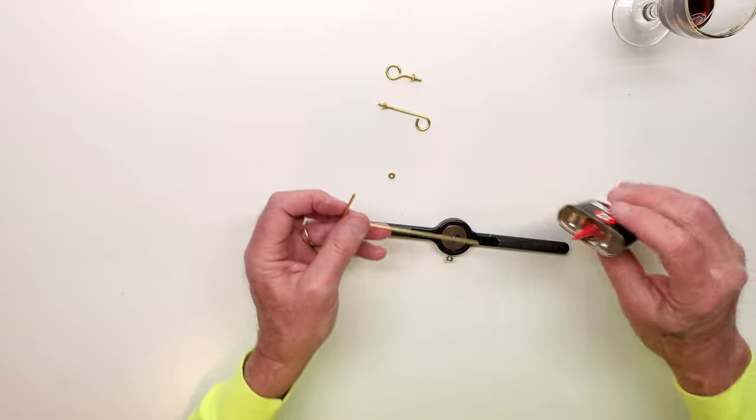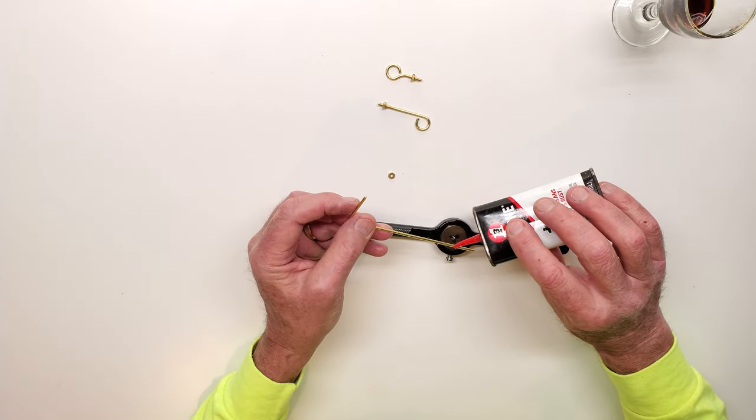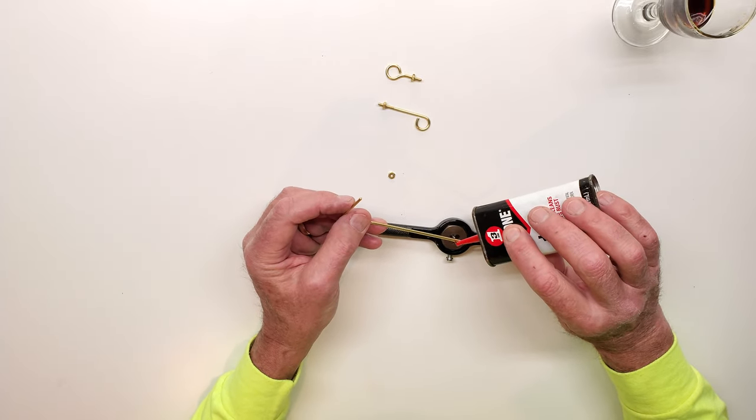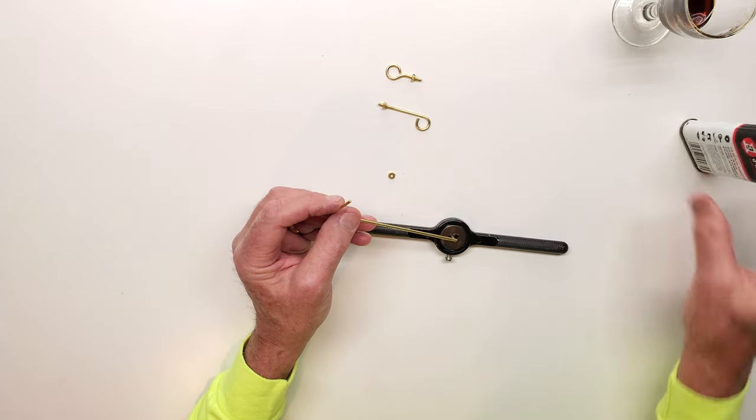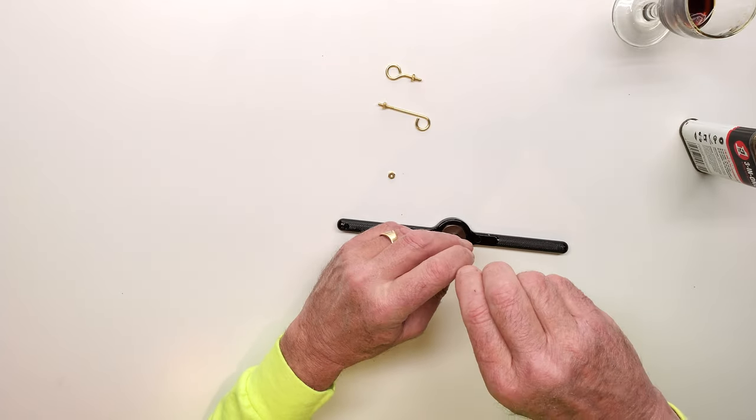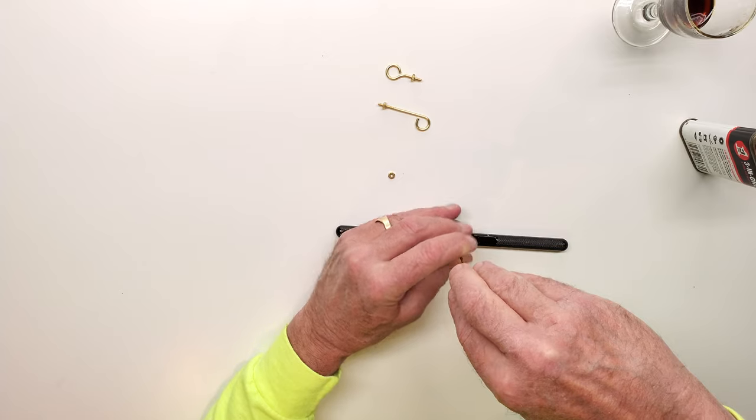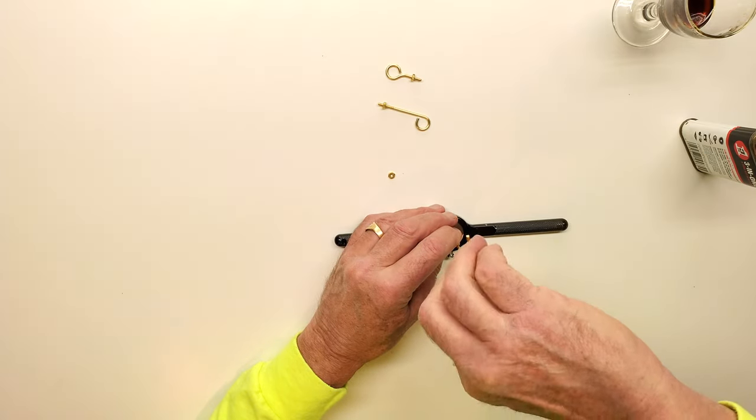So the first thing I'm going to do is apply oil to the rod and apply some oil to my die. To start it, I'm going to start turning it clockwise into the die.